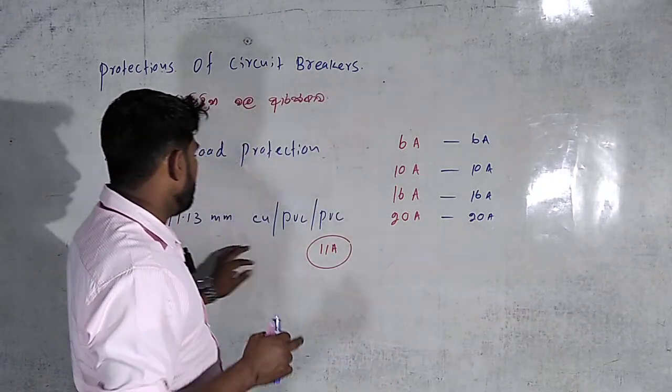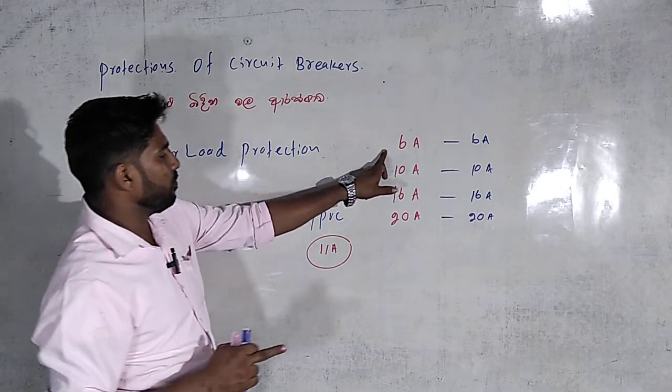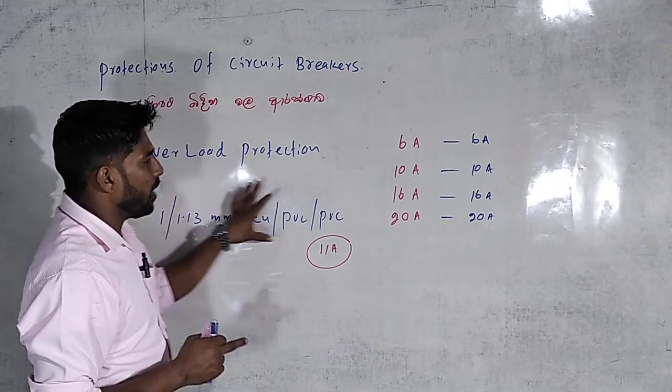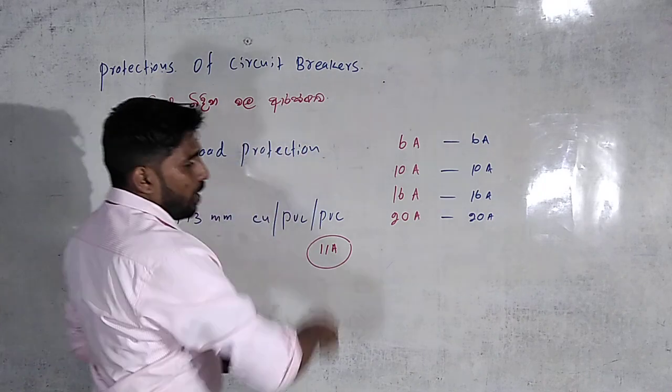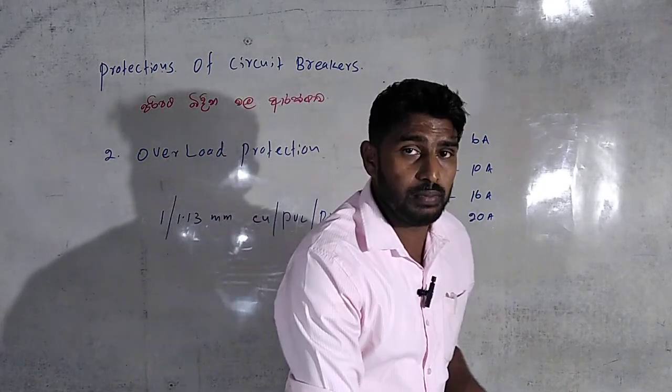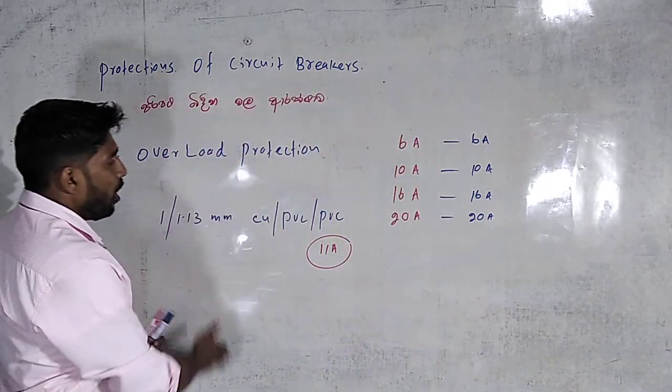And the answer is that we have a 6 ampere breaker, but we have to do what's going on. This ampere is a problem. We have to do the ampere.